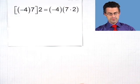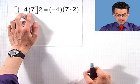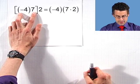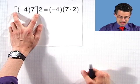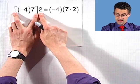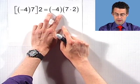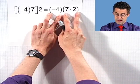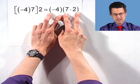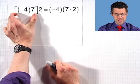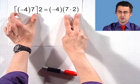What about this one? Well, here I'm taking negative 4, multiplying it by 7, and then taking that answer and multiplying it by 2. This is claiming that's the same thing as negative 4 multiplied by 7 times 2. What's the difference? Here I did this multiplication first, and here I'm doing this multiplication first.